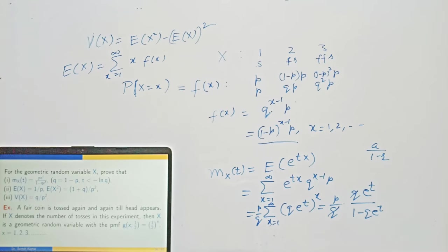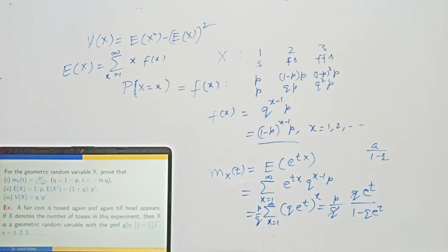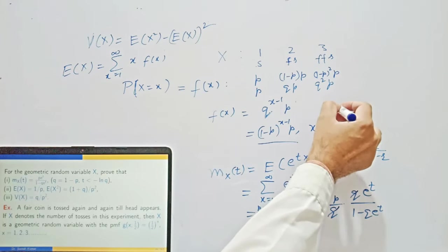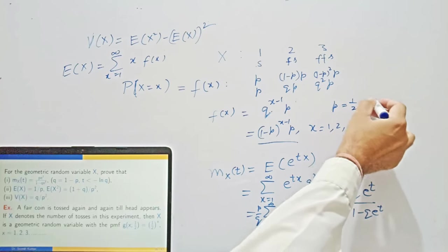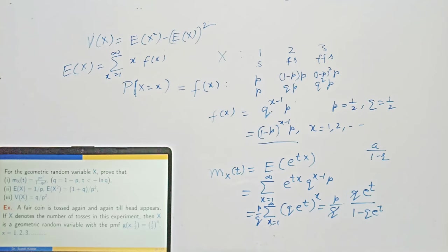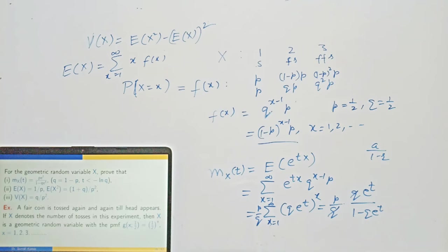Example of geometric distribution: A fair coin is tossed again and again till a head appears. If X denotes the number of tosses in this experiment, then X is a geometric random variable. In this case P = 1/2 and Q = 1/2, so using the formula of geometric distribution you get PMF = (1/2)^x.